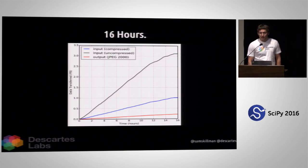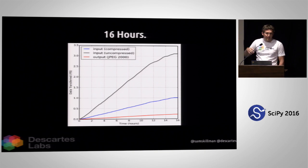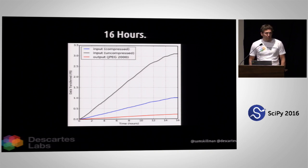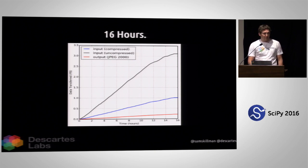16 hours later, we had processed a petabyte of imagery — that's the compressed imagery, mostly bzip compressed. Uncompressed, it's over three petabytes of data, which we compressed down in JPEG 2000 to just a fraction of that. 16 hours to process the entire catalog of Earth observation data using Python tools in the cloud. That's just kind of fun.